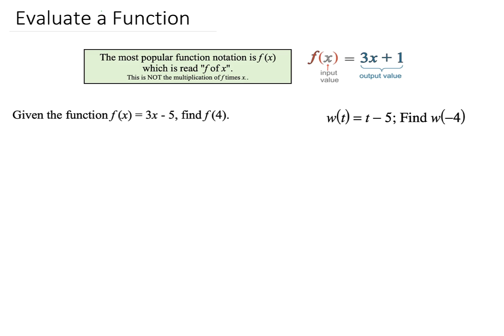Given the function f of x equals 3x minus 5, find f of 4. So I need to find f of 4. Here's my f, and I'm going to make my 4 red so that you have an idea of what I'm talking about. So my 4 is red. Wherever you see x, right here, you're going to replace it by 4.